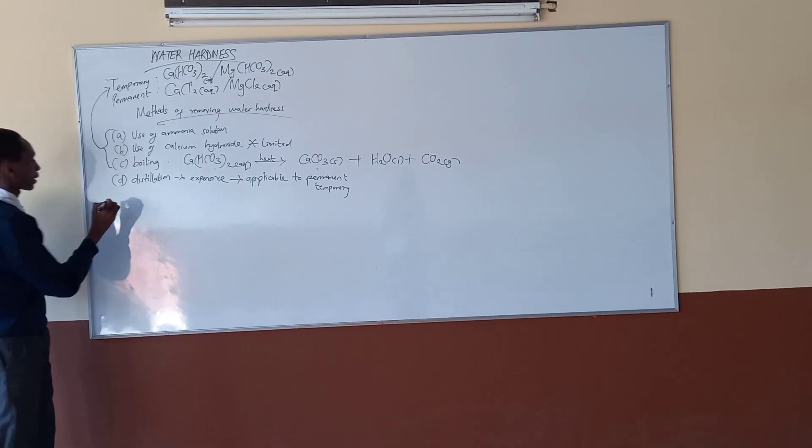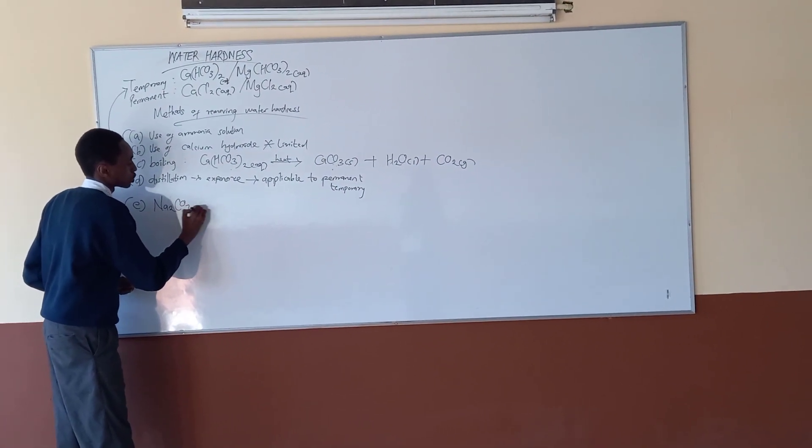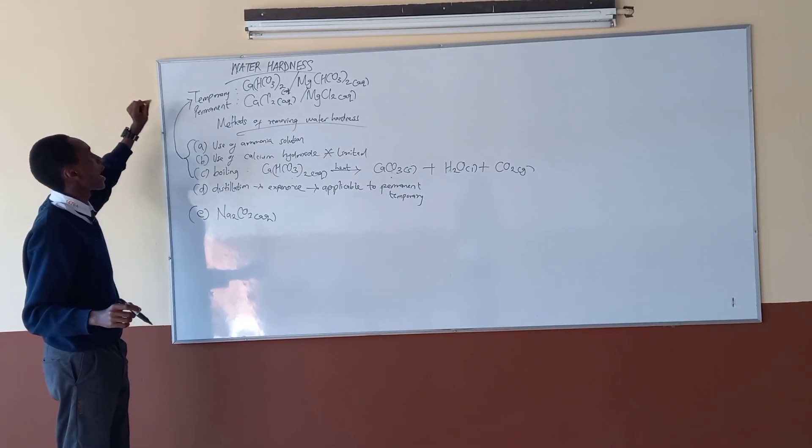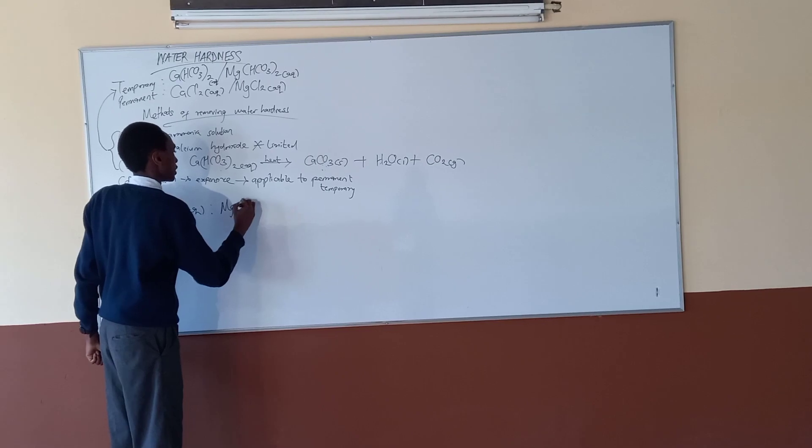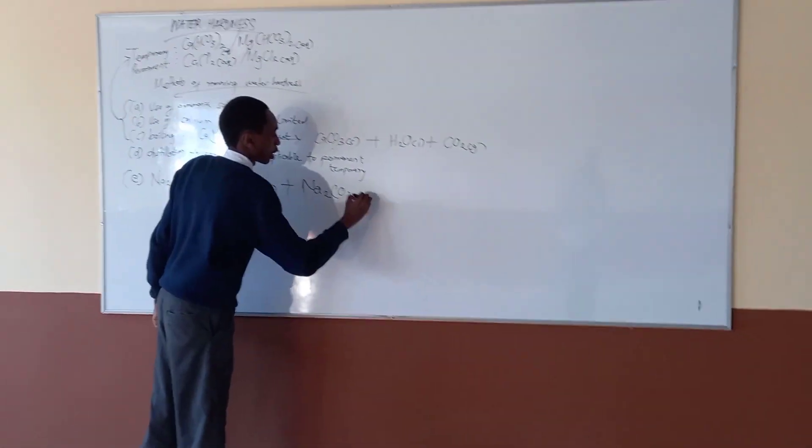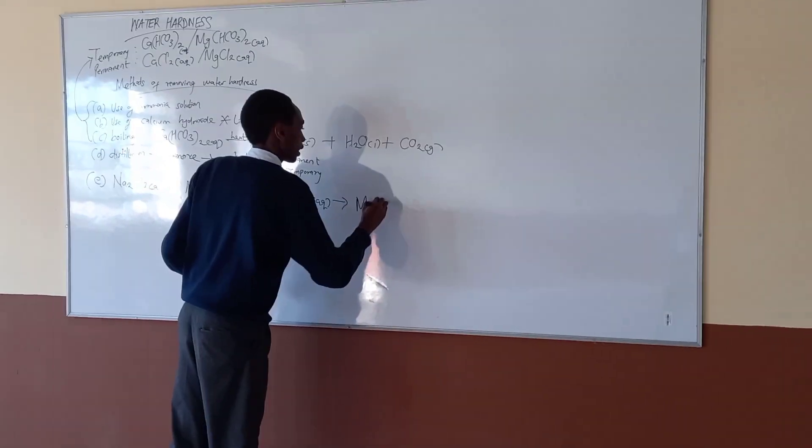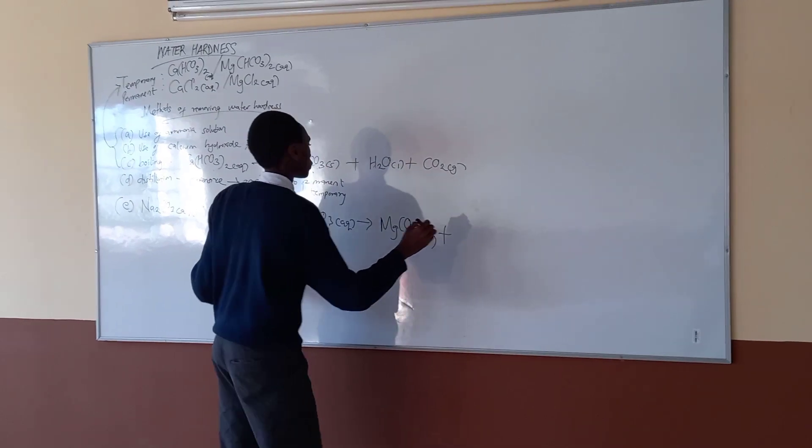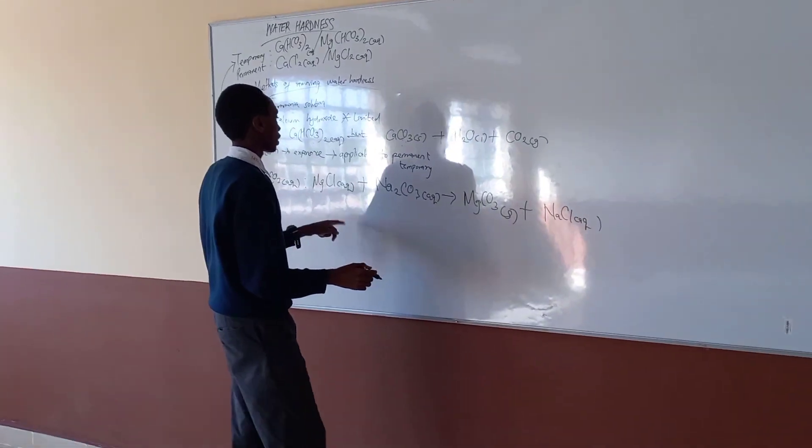Part E, we can use sodium carbonate solution. When we use this solution, this can be to remove temporary water hardness and permanent water hardness. So, for example, magnesium chloride aqueous plus sodium carbonate solution. What we get is magnesium carbonate, an insoluble salt that will precipitate out, and we will get sodium chloride aqueous in the water. Let's balance the equation. The equation is now balanced.